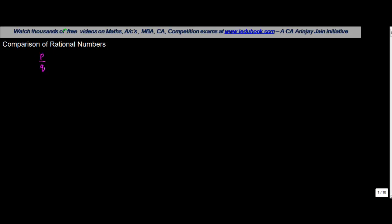Let us understand a bit more about comparison of rational numbers. Many times you might be given two or three rational numbers and asked to compare them. Rational numbers are of the form p upon q, where p and q are integers and q is not equal to 0.